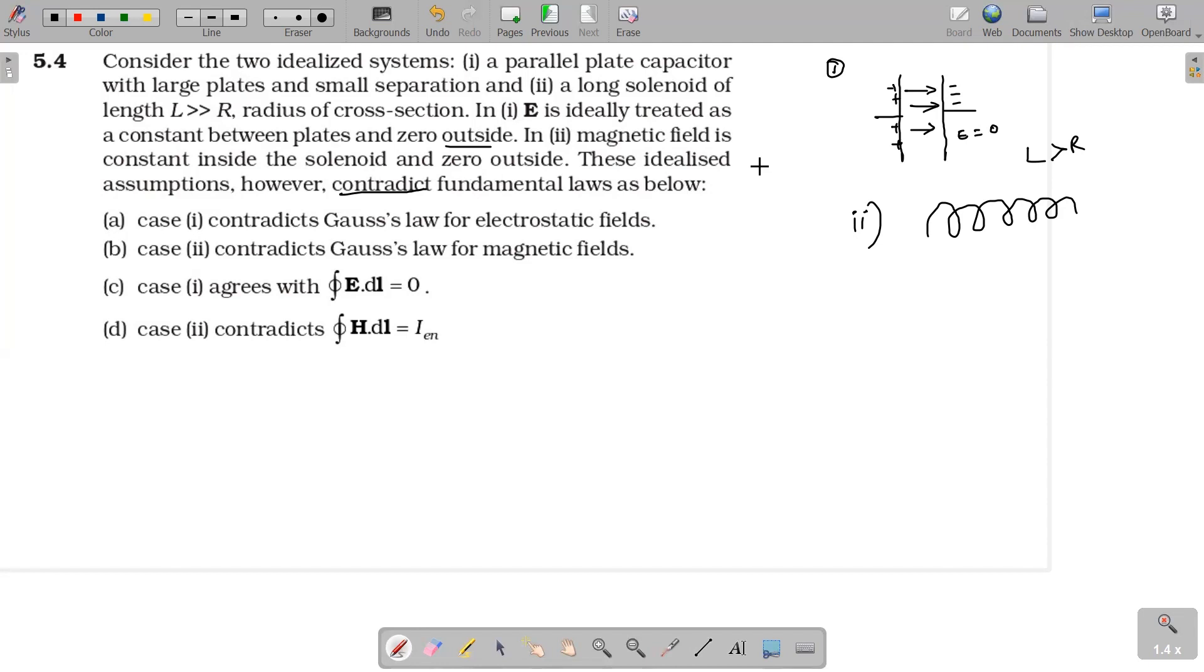The magnetic field is constant inside the solenoid and zero outside. That also we know magnetic field inside is mu naught n i, is constant throughout. Magnetic field will be present inside and constant in the sense if it is infinite long, uniform at the center. Okay, infinite, infinite long.